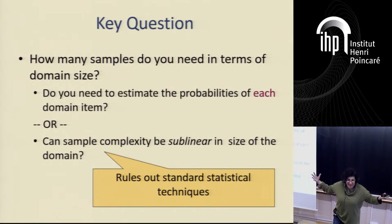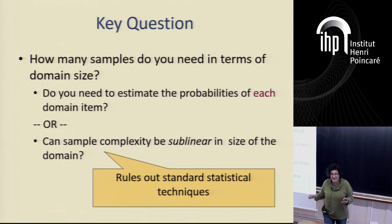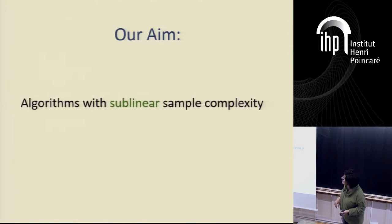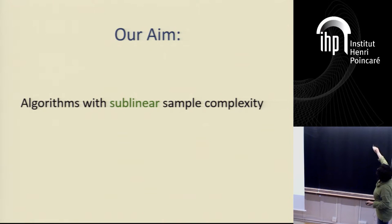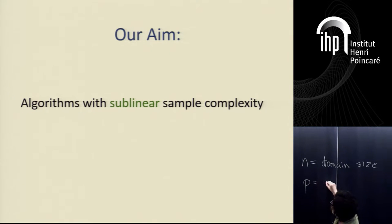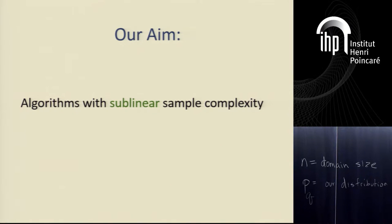If you have an assumption — like you assume the distribution is Gaussian — then you can say I'm going to learn just a parameter; I don't actually have to learn the probability on each element. But here we don't have that assumption. We're not assuming it's a Gaussian. It's some arbitrary distribution, and I may be trying to test if it is a Gaussian. We're trying to understand that without being given any a priori knowledge. The goal is algorithms with sublinear sample complexity. Here, n is the domain size and p is usually our distribution.